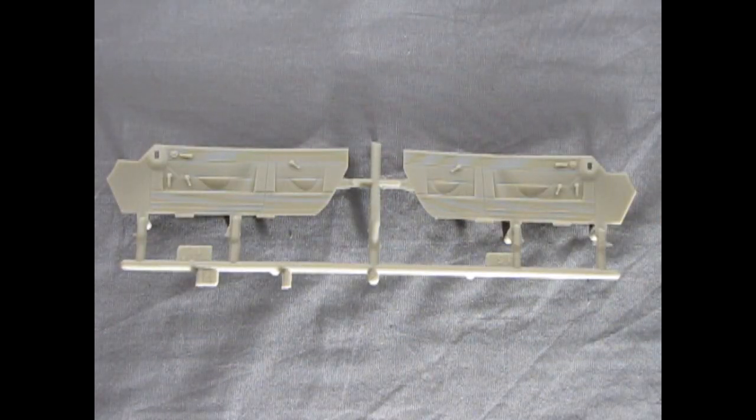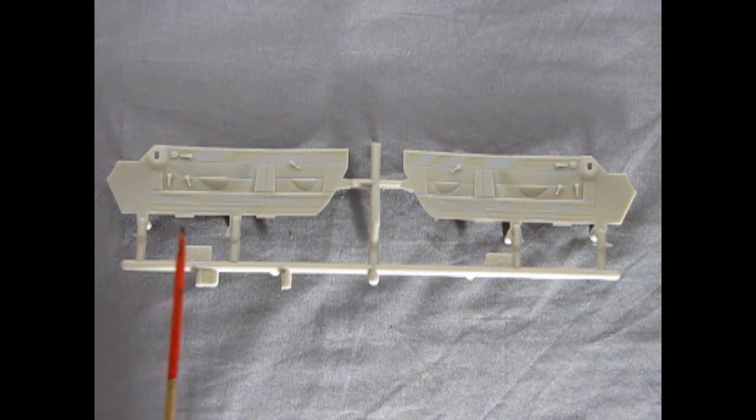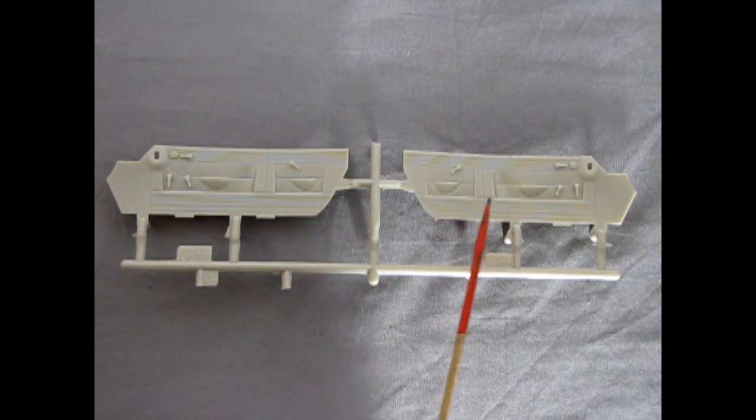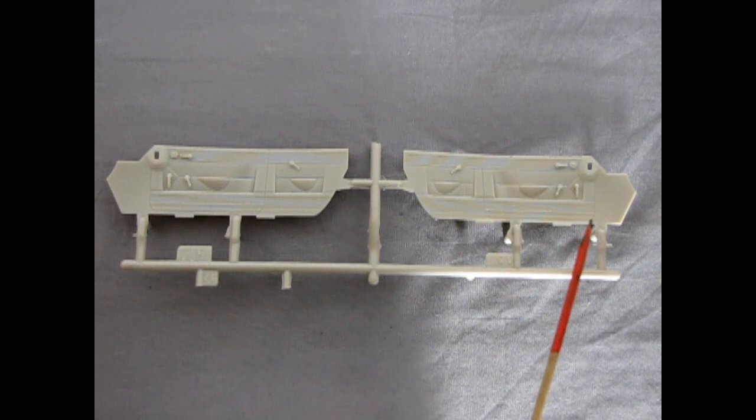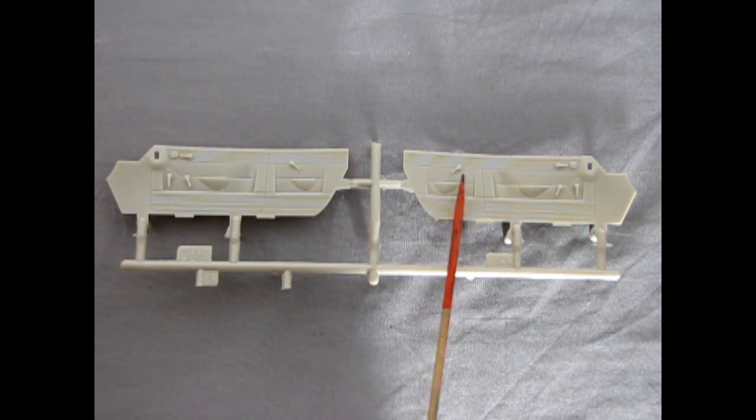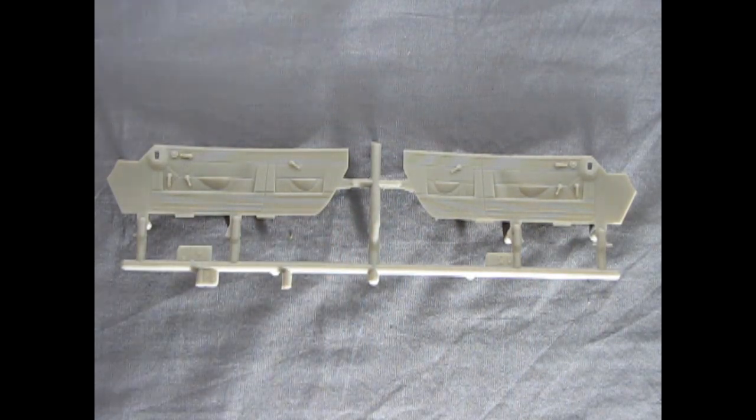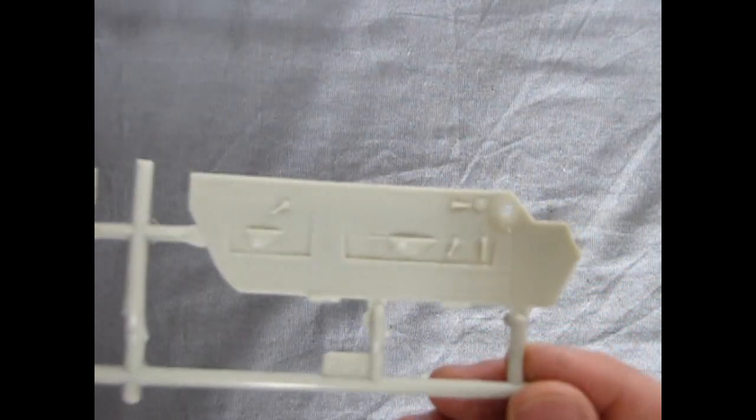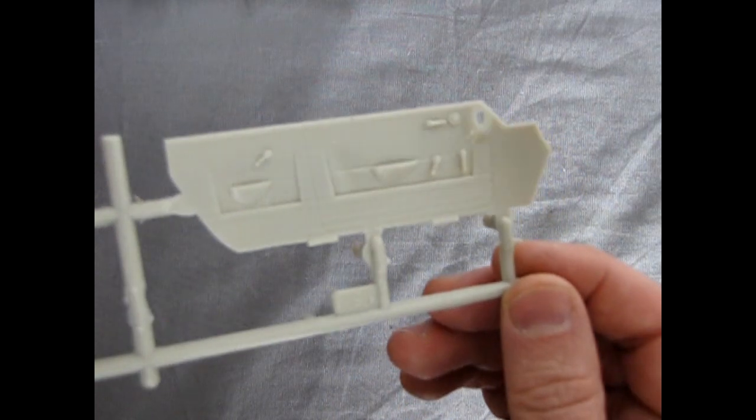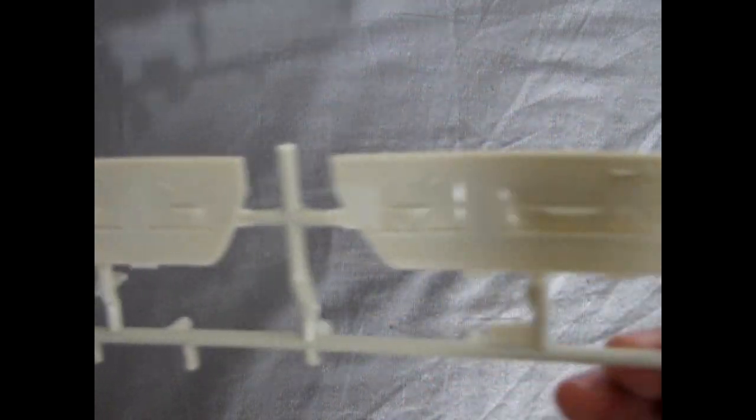And here's something any model builder can get behind are separately molded door panels. Because here you can actually get your paint inside there. You can lay down your bare metal foil on your handles and molding. And again these will all look very good in the end. So just take a look at that beautiful detailing in there. Again quite a nice quality kit that I'm sure you would want on your shelf.